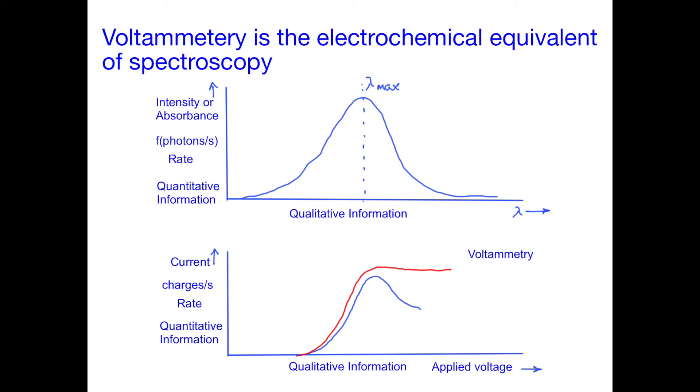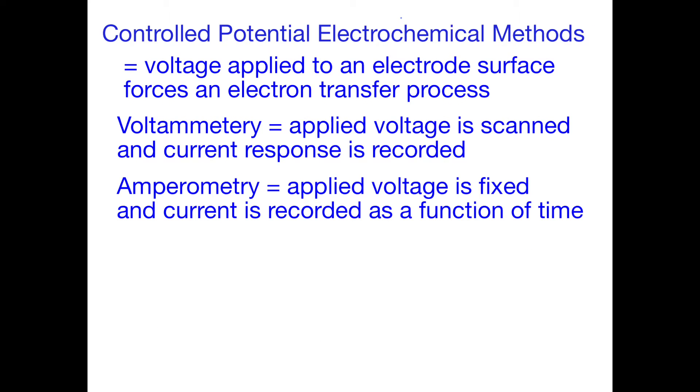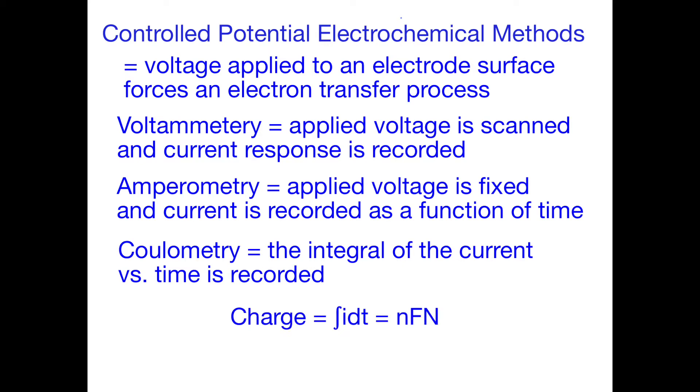The parallel experiment in electrochem would be to hold the applied voltage at a fixed value and monitor the current. We call this variation amperometry. It's integrated to get the charge that's transferred. This is attractive because the charge is proportional to the number of moles of the analyte that has been oxidized or reduced. When we measure the charge in an electrochemical experiment, the method is called coulometry.